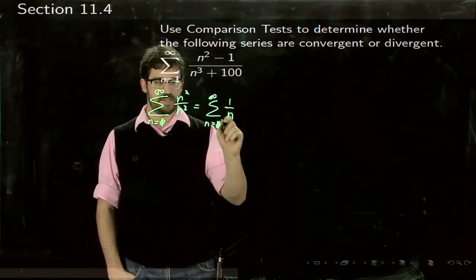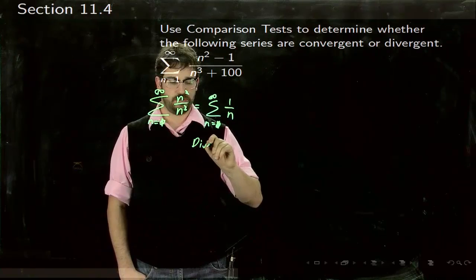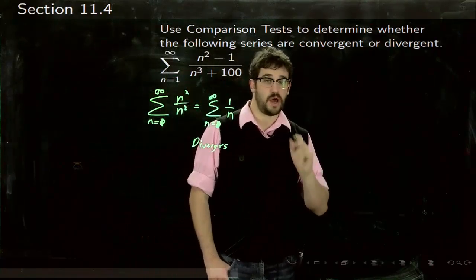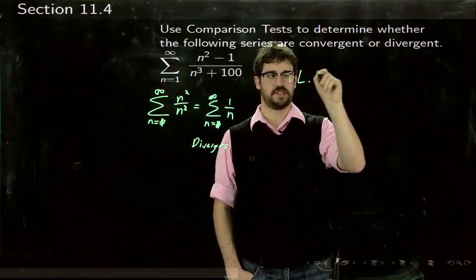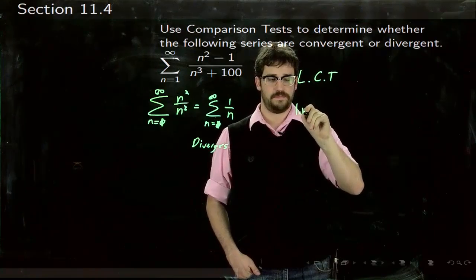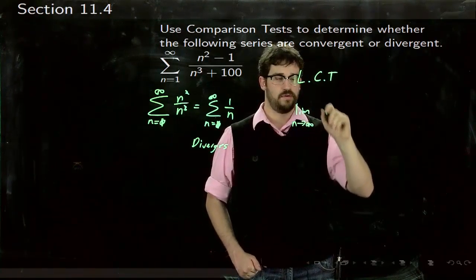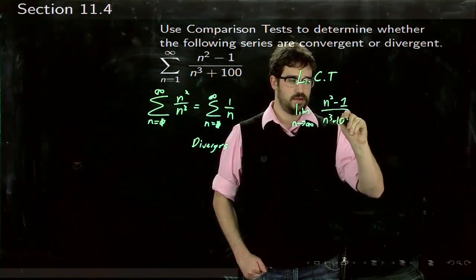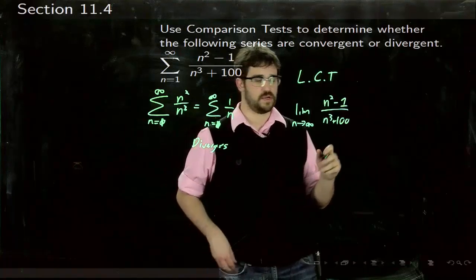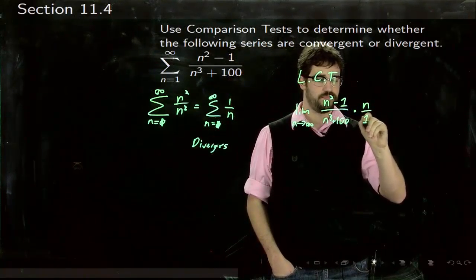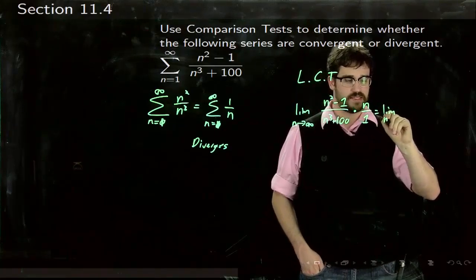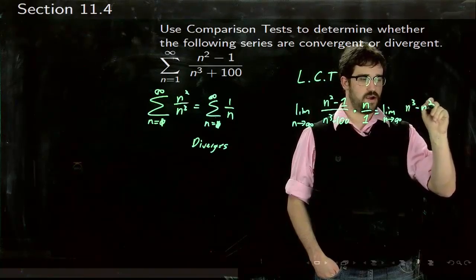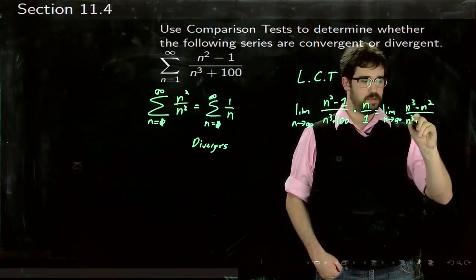Now we know that this series diverges, but we're not done yet. We need to do the other part of the limit comparison test, where we take the limit as n goes to infinity of (n² - 1)/(n³ + 100) divided by 1/n — or multiplied by n/1 — which equals the limit as n goes to infinity of (n³ - n)/(n³ + 100).